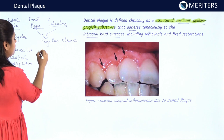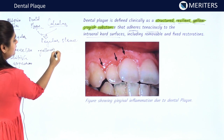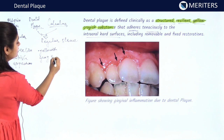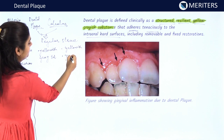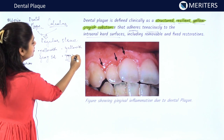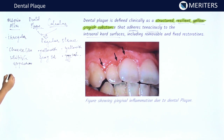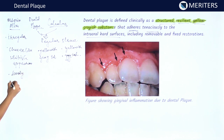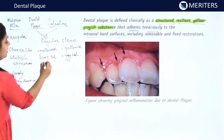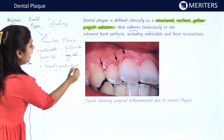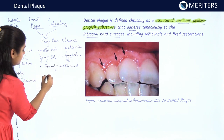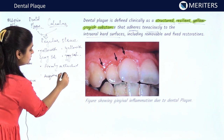Dental plaque is a yellowish-grey substance. Materia alba is loosely attached with the tooth and it can be easily removed, while dental plaque and calculus are firmly attached with the tooth and they require special instruments for removal.